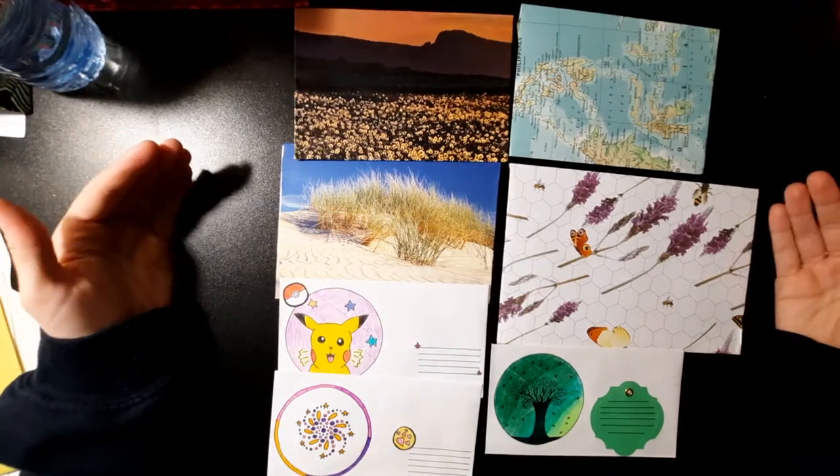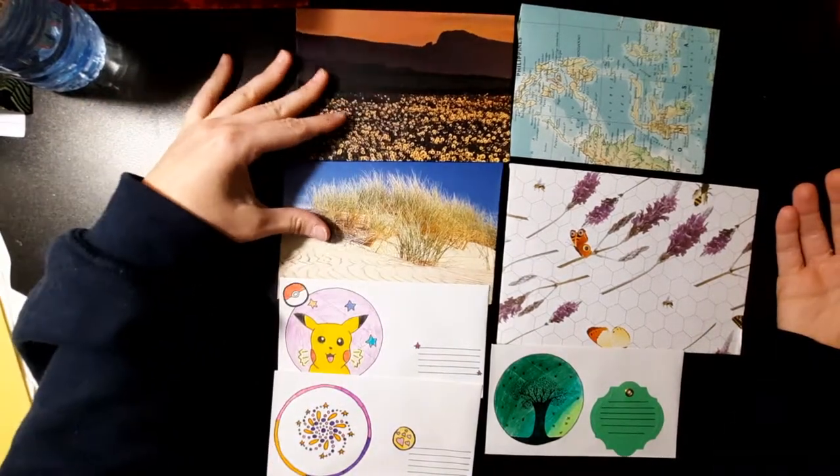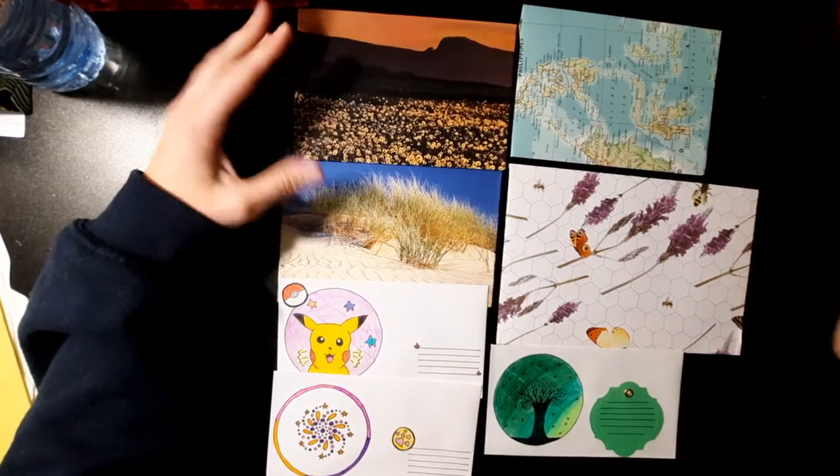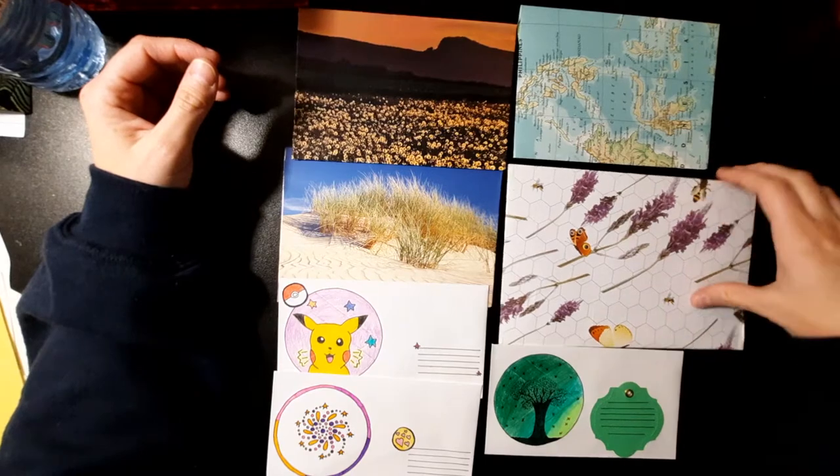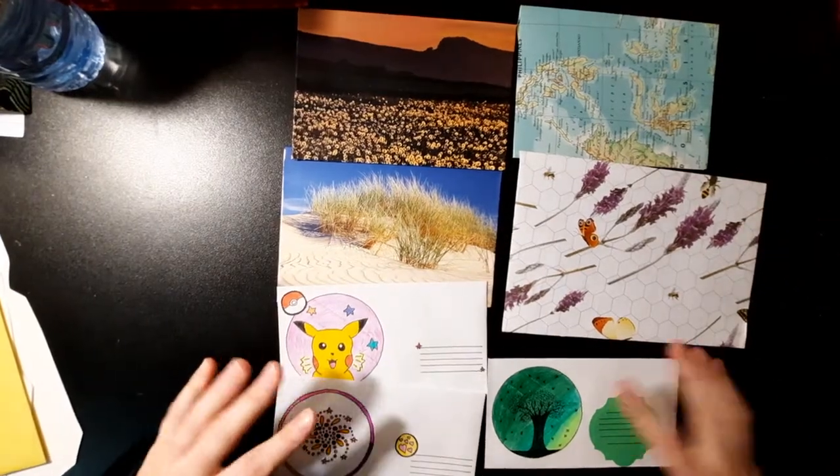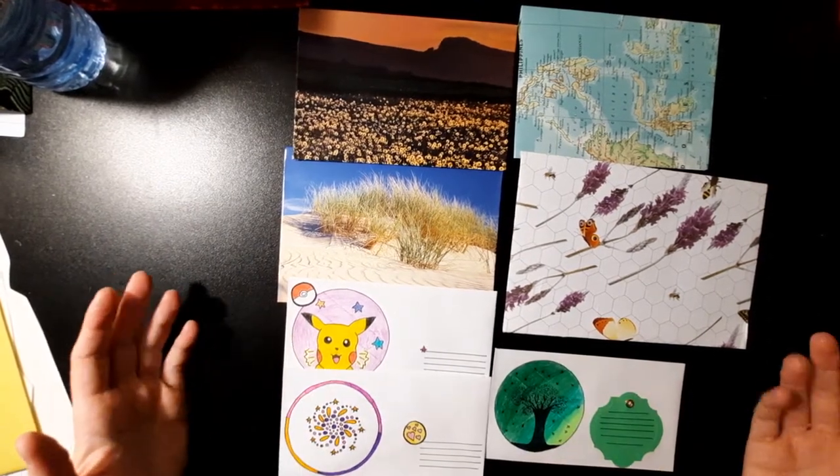So the envelopes you see here are some of the ones that I've made. These ones here are actually cut out of an old National Geographic magazine. This is from an old atlas. This was actually wrapping paper. These ones were just plain white envelopes, but I drew on them and glued stuff on them to make them a little better.